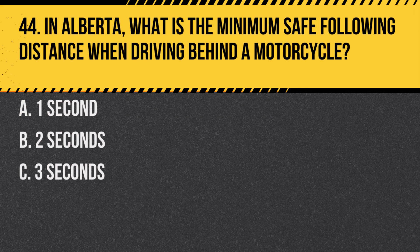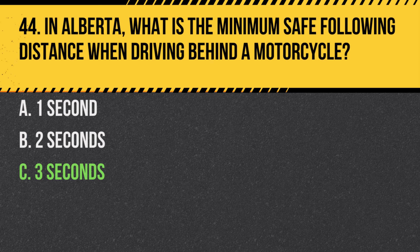Question 44. In Alberta, what is the minimum safe following distance when driving behind a motorcycle? a. One second. b. Two seconds. c. Three seconds. Answer: c. Three seconds. A greater following distance is recommended for motorcycles due to their ability to stop more quickly.